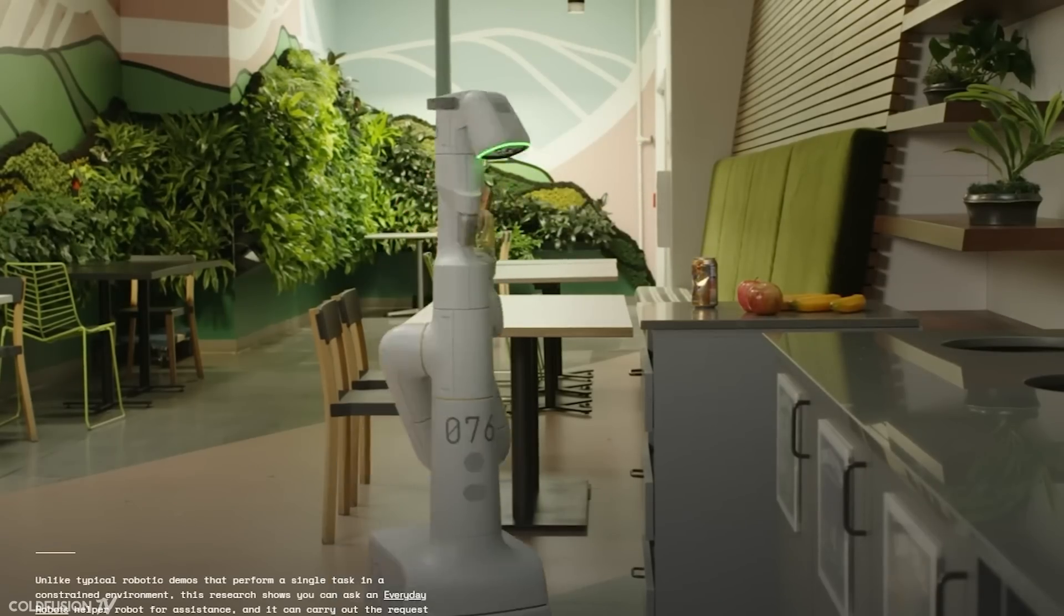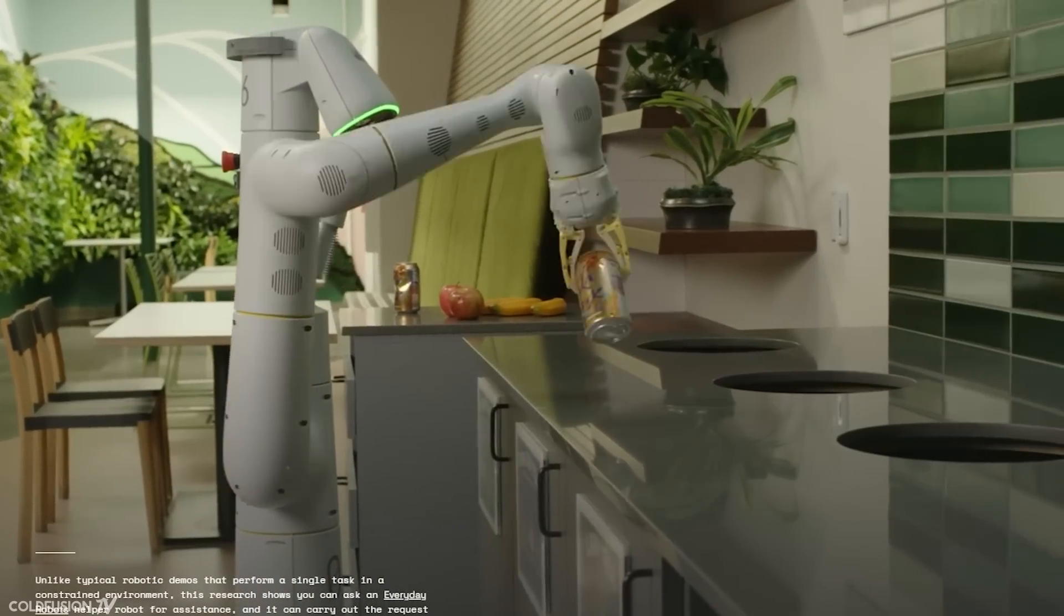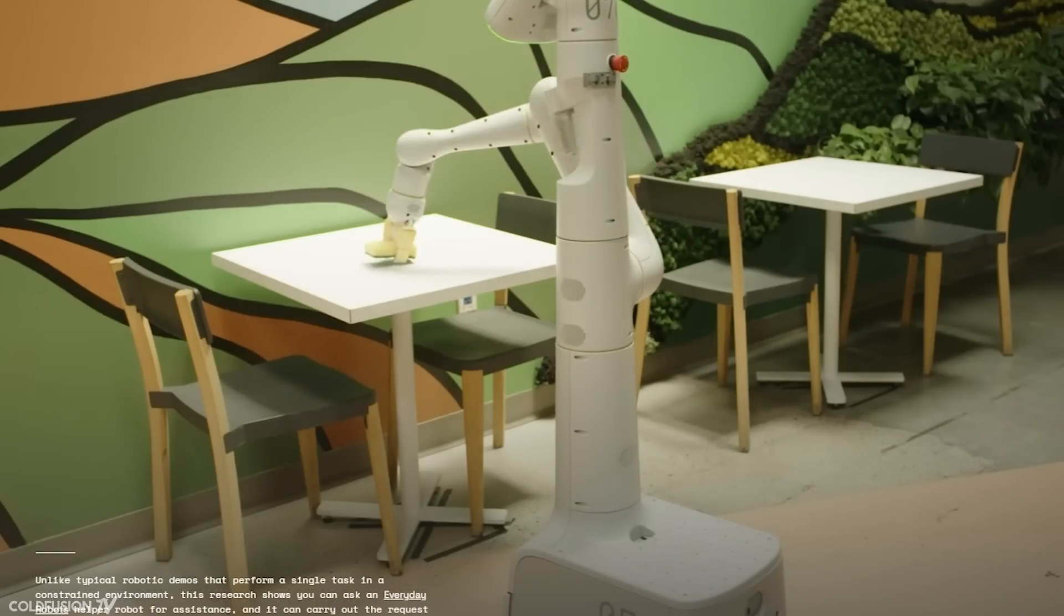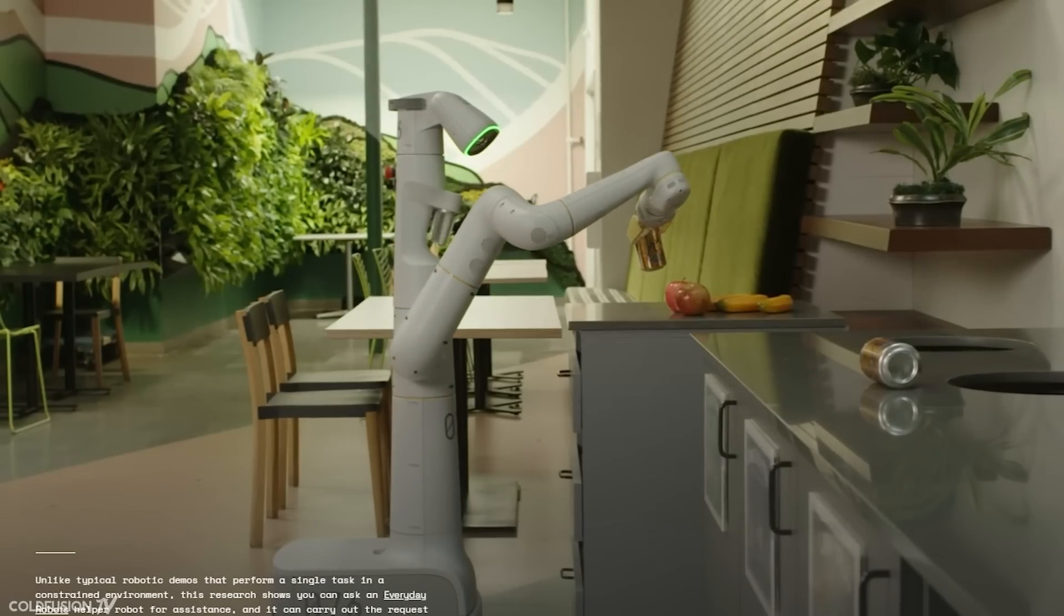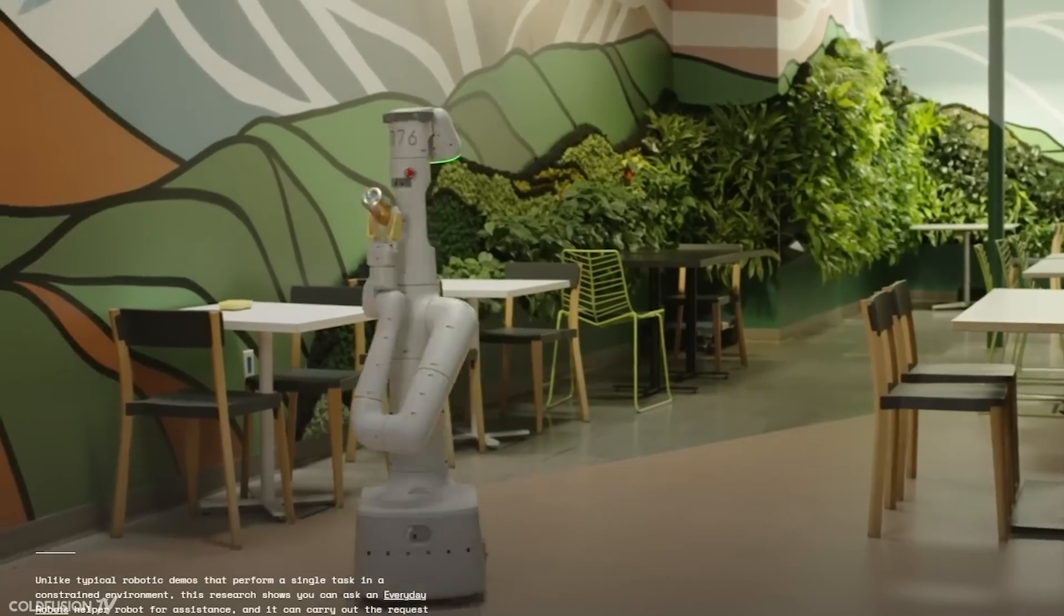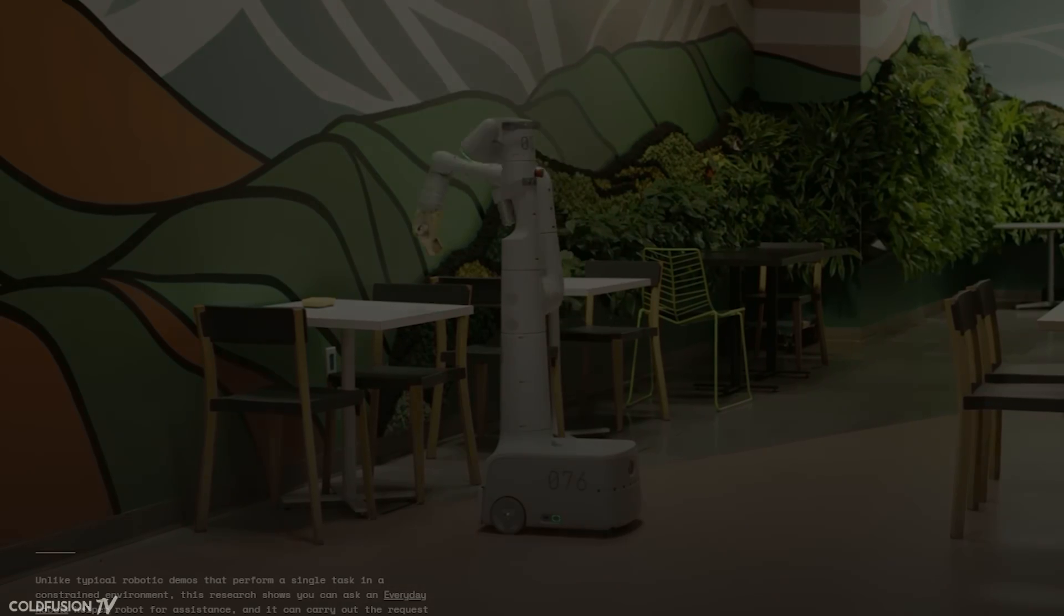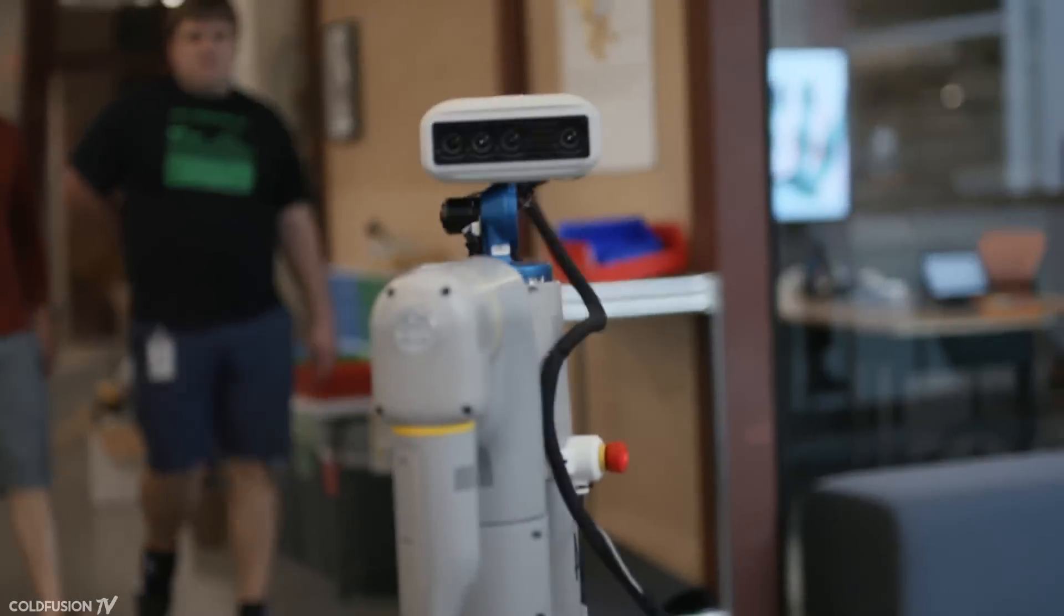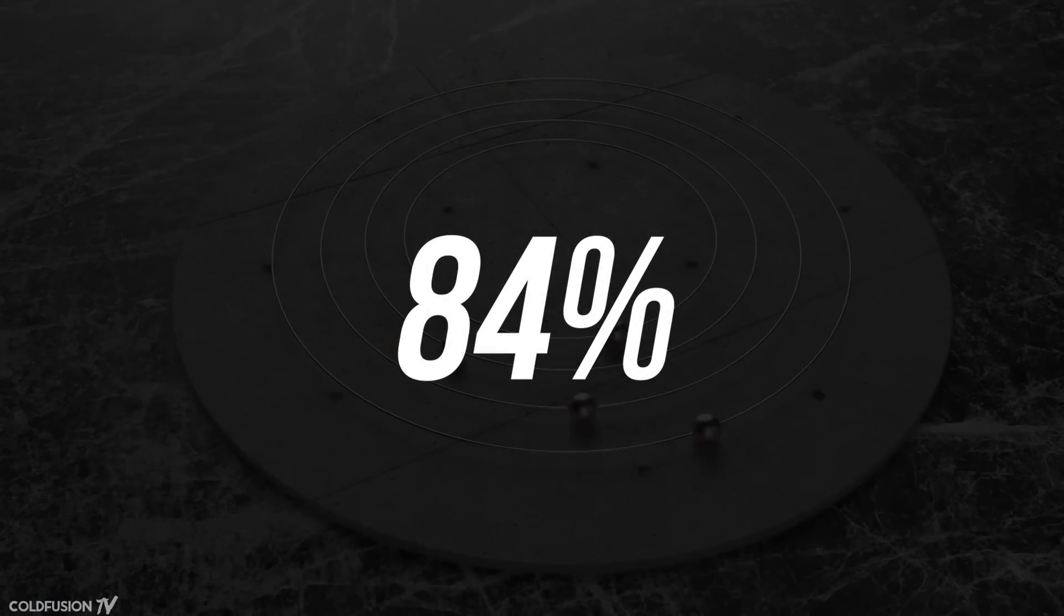So finally, the robot's world grounding was tied into another section of code that turns high-level instructions into low-level subtasks that can then be performed. Once all of this is done, you have a robot that can understand and then perform tasks without human intervention, and it does so better than anything else out there at the moment. In their paper, Google claims that the language model and robot selects the right sequence of skills 84% of the time and executes them successfully 74% of the time.